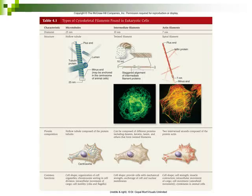Microtubules are the larger filaments, mostly used for cell shape and to organize all of the organelles inside the cell. Intermediate filaments are intermediate in size — hence the name — and they also help provide cell shape and can anchor the cell and nuclear membranes to each other. The smallest filament is the actin filament, which is very tiny. Actin filaments also help give the cell shape, help in muscle contractions, and help move things around inside the cell.